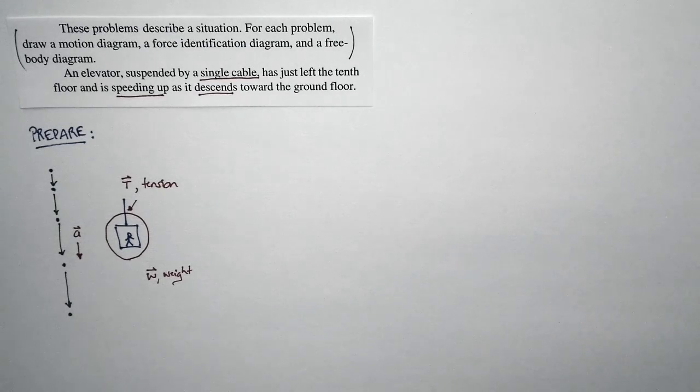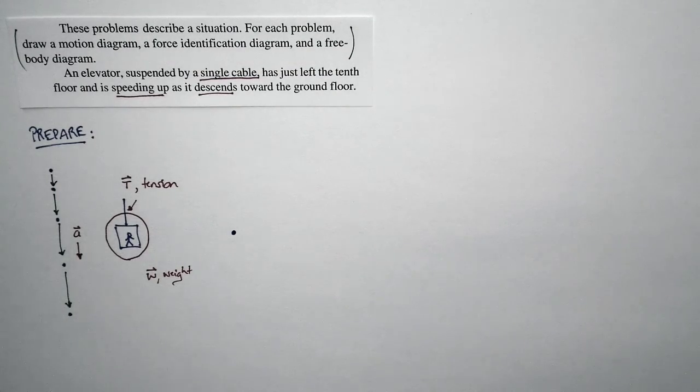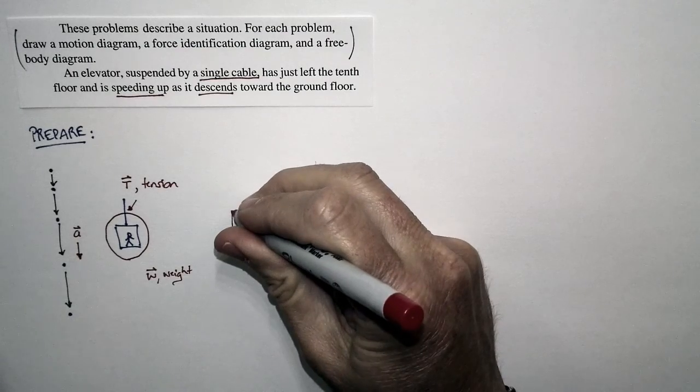So then, when we draw our free body diagram, it's going to look like this. I have two forces. There's a tension force, and that's directed upward. There's a weight force, and that's directed downward.